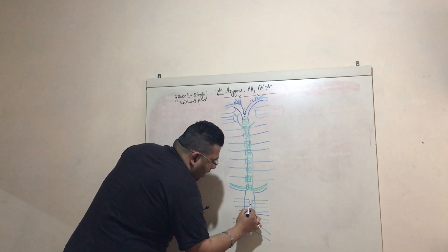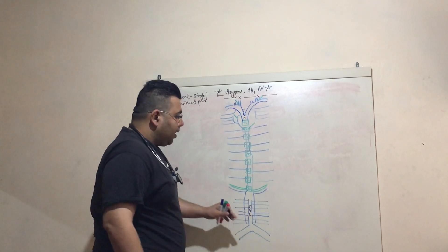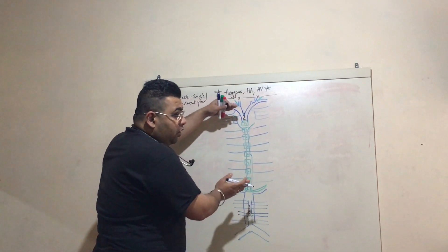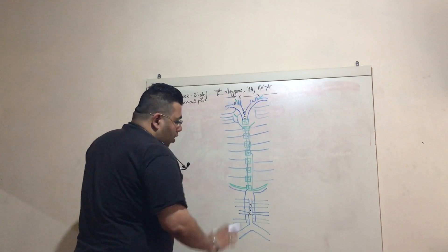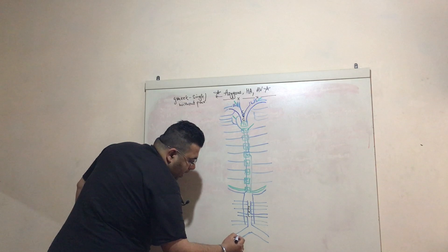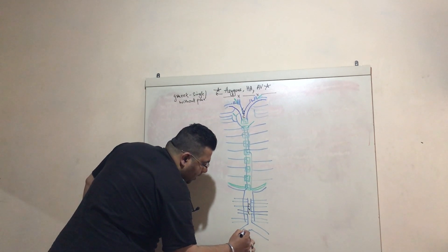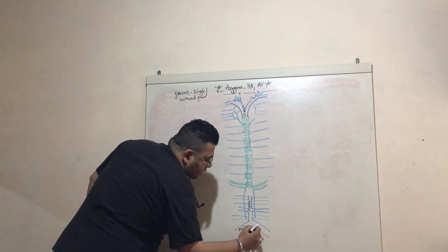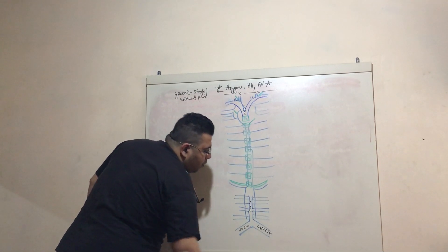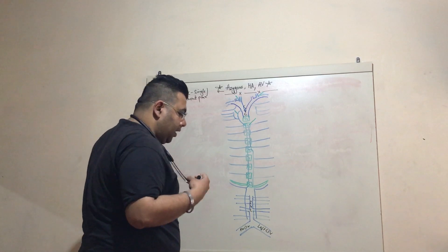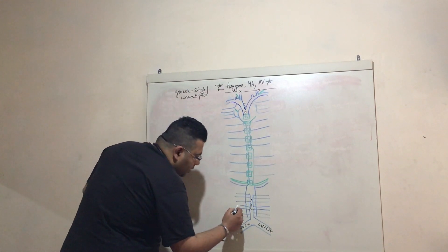Here I have made the inferior vena cava. For the clarity of the diagram, I'm not joining them. Here is the right common iliac vein and this is the left common iliac vein, which will be further divided into two.